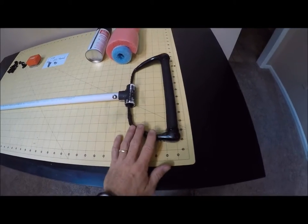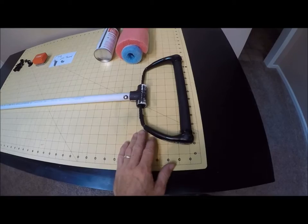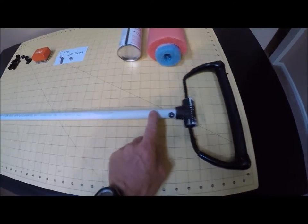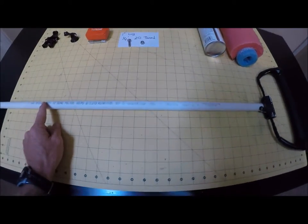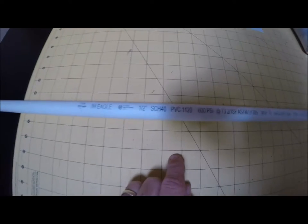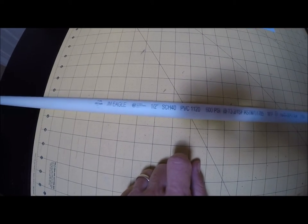First thing you'll need is the handle with the rope attached and the main item you're going to need is a piece of PVC. This one here is half inch PVC schedule 40, that's the thicker one.